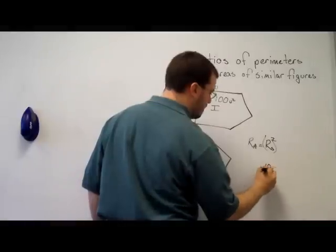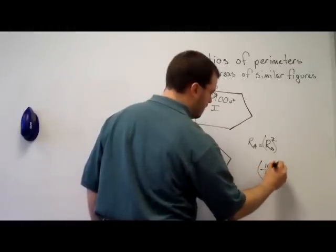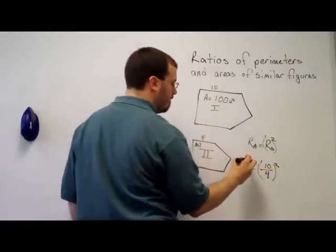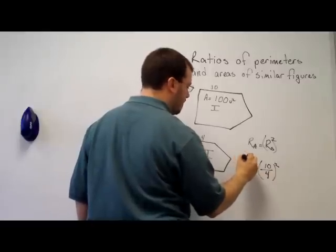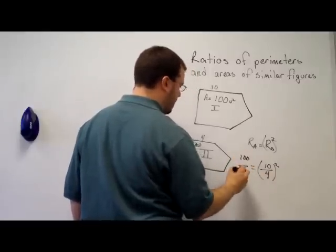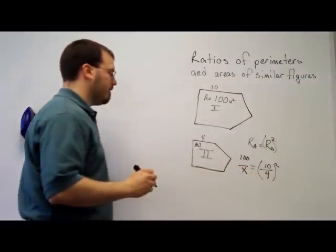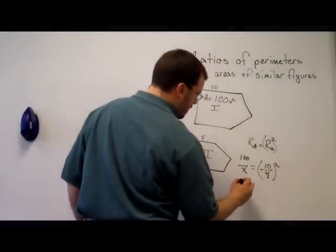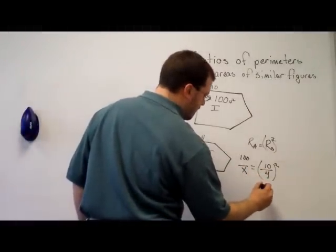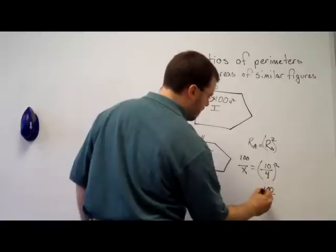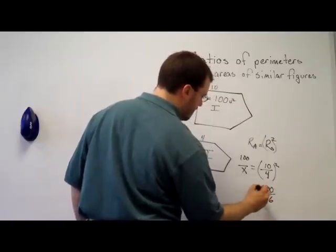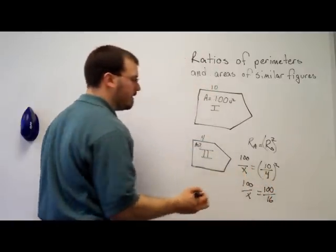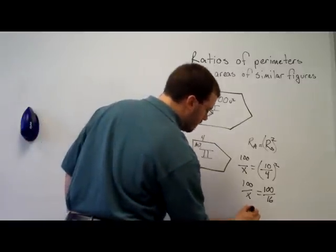and that's equal to the ratio of the areas. I know the area of the top figure is 100, and I'm looking for the area of the bottom figure. We'll call that x. So, ratio of the sides squared is 100 over 16 is equal to 100 over x. Well, that's a fairly simple proportion to solve. x must be 16.